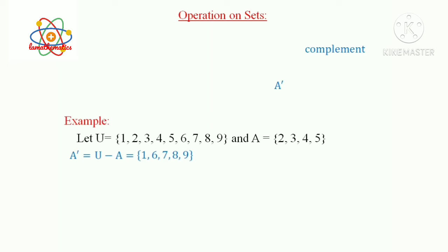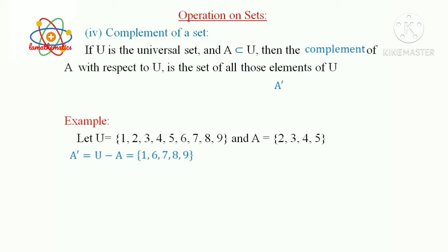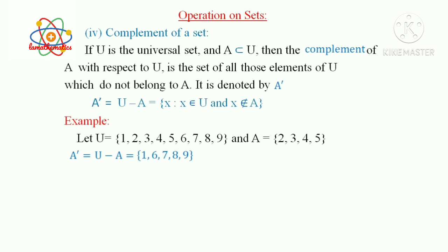Then we can define complement of a set. If U is the universal set and A is a subset of U, then the complement of A with respect to U is the set of all those elements of U which do not belong to A. It is denoted by A′. In set builder form: A′ = U−A = {x : x ∈ U and x ∉ A}.